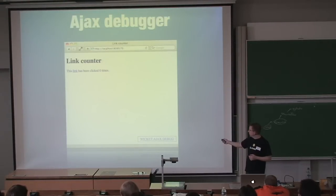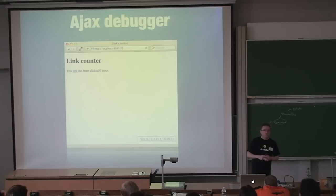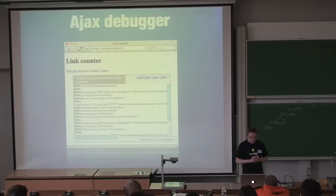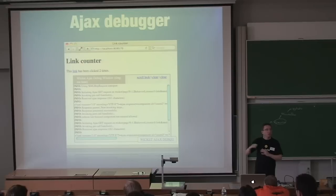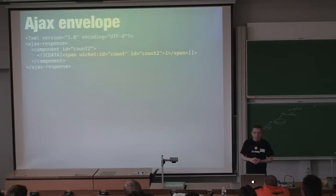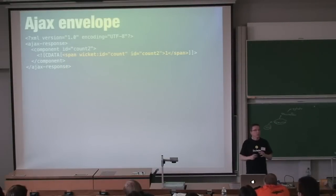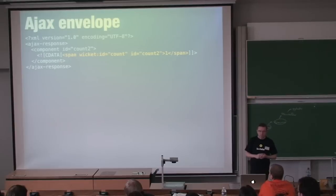There's a quick look at the Ajax debug window. On the link counter page, at the bottom you see a link for the debugger. Click it and you get a small window showing everything that happens with Ajax in Wicket — which components have been transmitted using Ajax, and the markup.